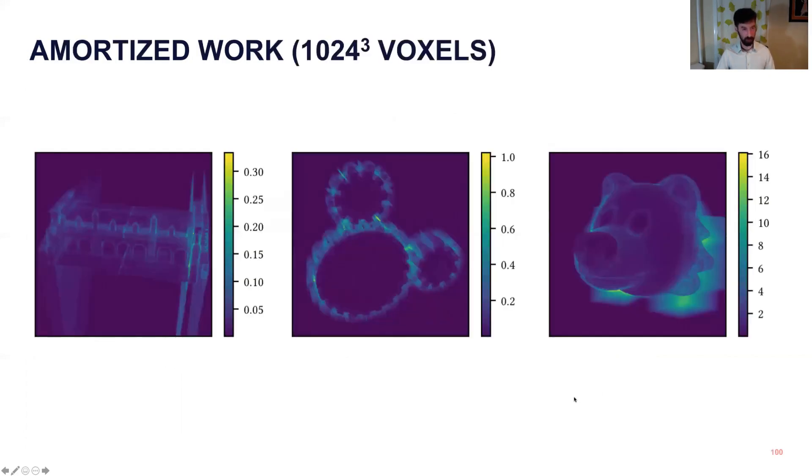And we can revisit the same metric of amortized work per pixel for these 3D cases, and we see pretty much what we expect, where the architecture model is evaluating the model less than once per pixel. This is more impressive when you remember that each pixel is actually a stack of a thousand voxels. The gears are a little bit less efficient, and then the bear is much less efficient, although it's still only evaluating the function a max of about 16 times per pixel here. And you can see there's sort of an interesting behavior where this is similar to sphere tracing. Around the edges of the model, you see it's doing more work because it can't quite prune those as efficiently.